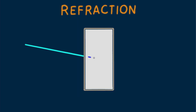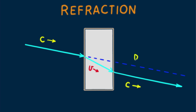Here we see a ray of light entering a pane of glass at an angle. The speed of light in a vacuum we call C, constant. It's nearly C in air, but its average speed V inside the glass is considerably less than C. We see it emerges from the glass parallel to, but somewhat displaced from its initial path. Light changing speed from one material to another gives rise to refraction, the subject of this lesson.